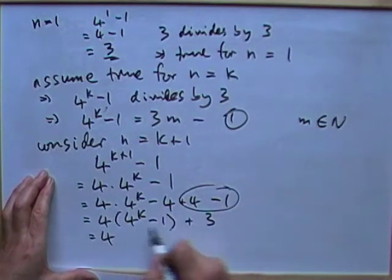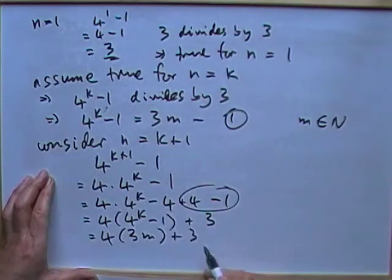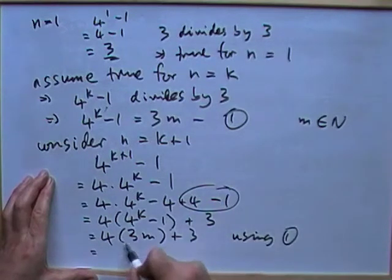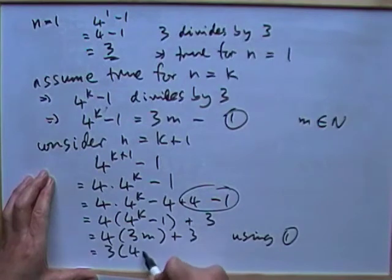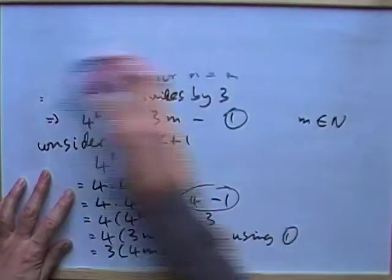Either way around, that becomes plus a 3 from this part here. Then 4 to the k minus 1 is 3m. So I've got 4 times 3m plus a 3. That's using 1. Which then has got a common factor of 3. 3 to the 4m plus 1. Which divides by 3.